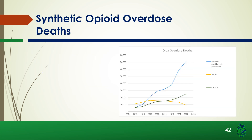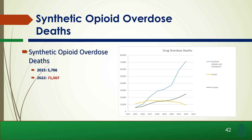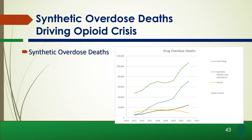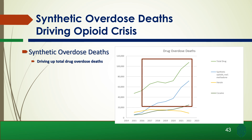Synthetic opioid deaths have been steadily increasing. The blue line shows synthetic opioid deaths, the yellow line is heroin, and the green line is cocaine. Synthetic opioid deaths in 2015 were 5,700; in 2022, that number rose to 71,000 — a drastic increase, more than 10 times over seven years. Synthetic opioid deaths are driving up the total drug overdose deaths, with synthetic opioids being the leading driving factor behind overall overdose deaths.